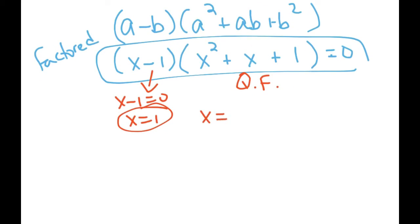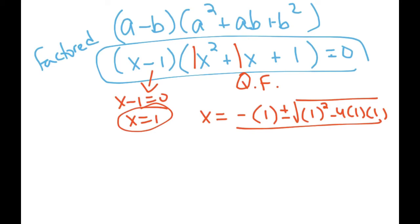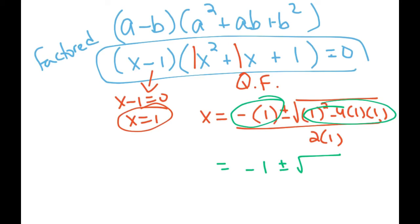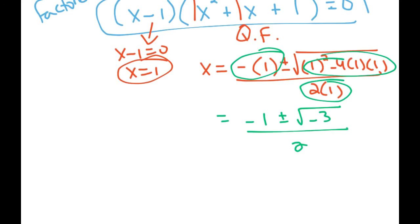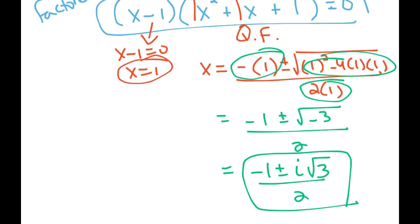To find the other two solutions, which must be imaginary, we're going to use the quadratic formula: x equals the opposite of b, which is 1 — remember, it's 1, not 1x — plus or minus the square root of b squared minus 4ac all over 2a. So I'm going to simplify what's under the square root sign, which is going to give me negative 3, and simplify. The only other thing I have to do is take out the i, because I can't take the square root of negative 3. So here are the other two solutions. My solutions are x equals 1, and the other two are negative 1 plus or minus i times the square root of 3, all over 2.